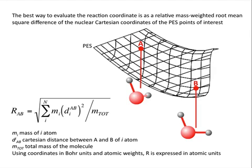And compute the distance R between these two structures as mass-weighted coordinates. This way, using coordinates in Bohr units and using atomic weights for the masses, R can be expressed simply in atomic units.